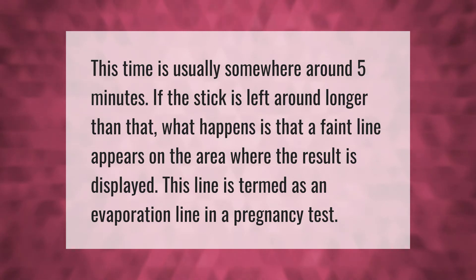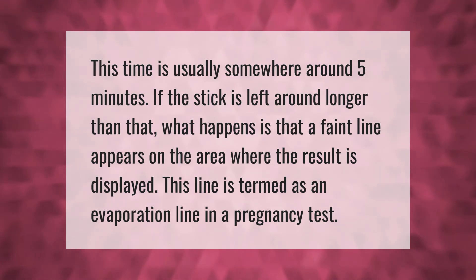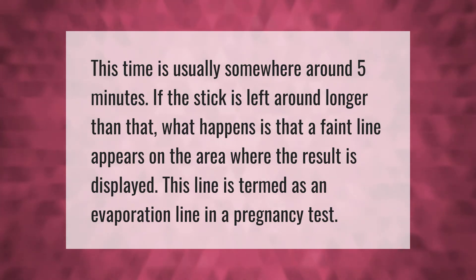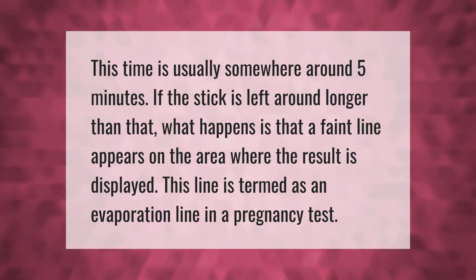The reading time is usually somewhere around five minutes. If the stick is left around longer than that, what happens is that a faint line appears on the area where the result is displayed. This line is termed as an evaporation line in a pregnancy test.